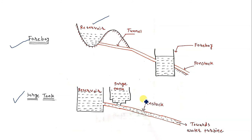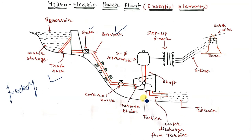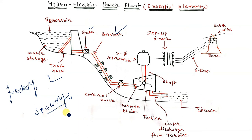The next element is the spillway. The function of the spillway is to safeguard the dam from excessive water during the rainy season. In conditions of heavy rain, the spillway helps to regulate water storage and works like a safety valve for the dam.